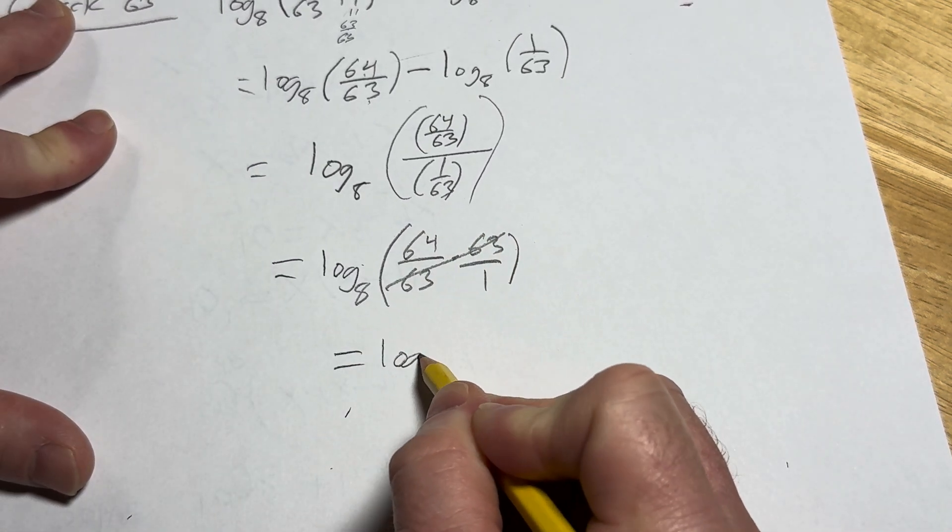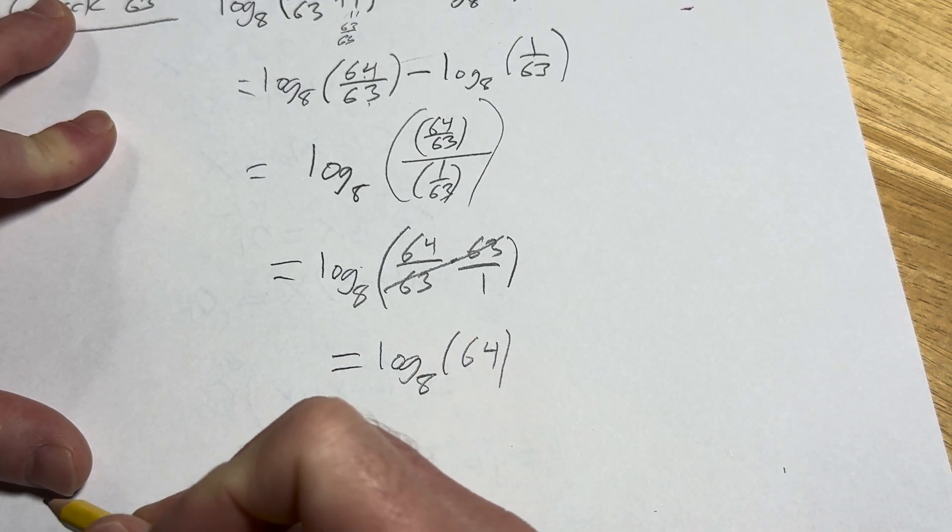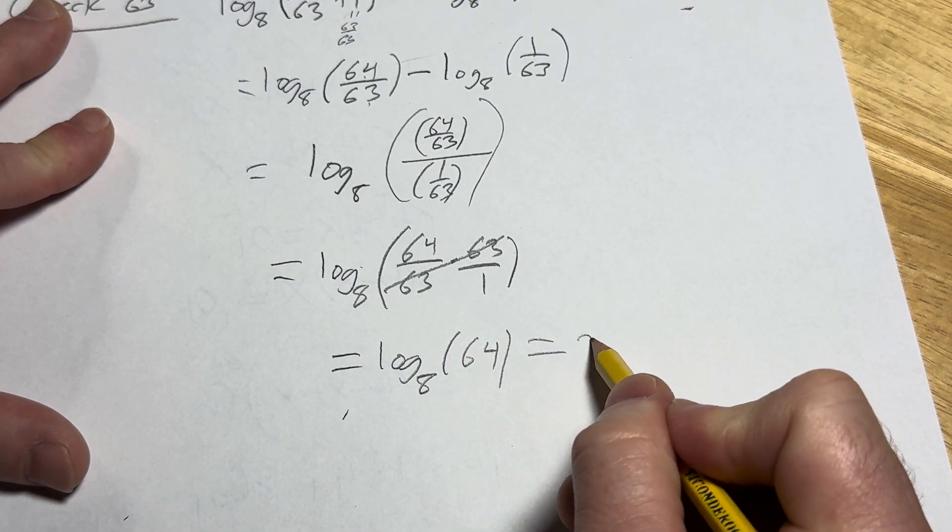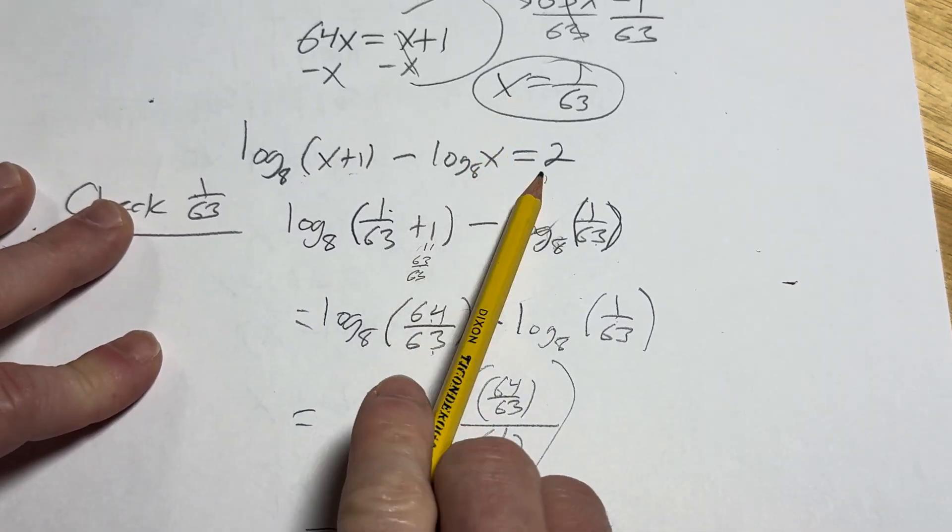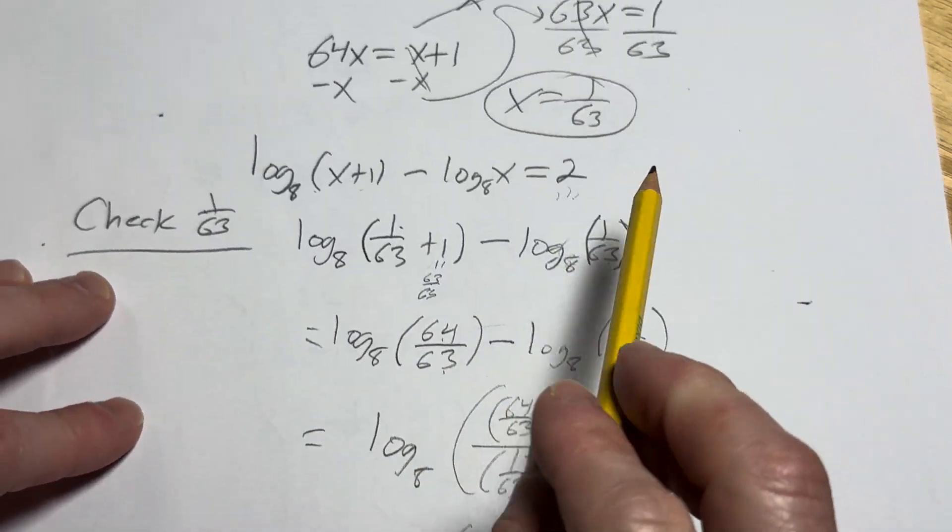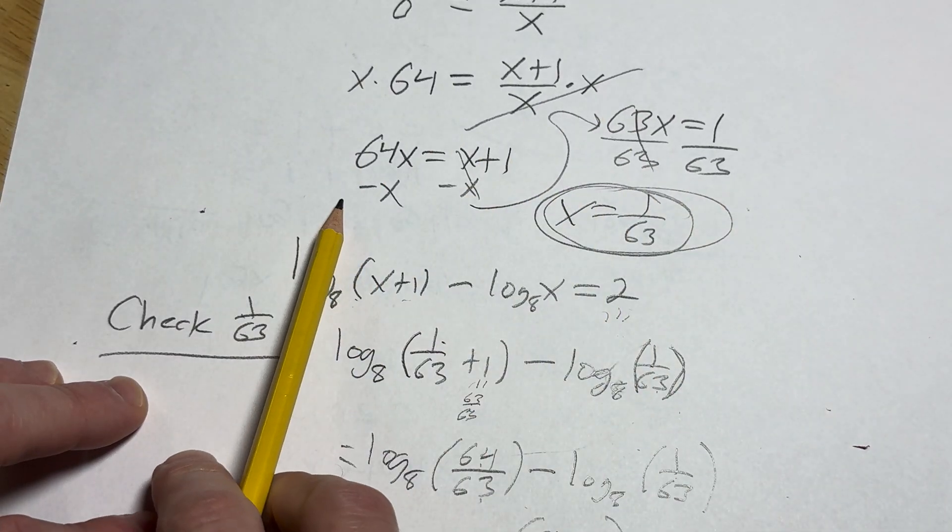So this is equal to log base 8 of 64. And you say 8 to what power is 64? 2. And boom, we're done because that's exactly what we wanted. So the answer does check. And so indeed, the answer is x equals 1 over 63.